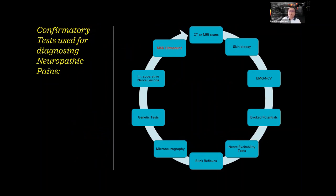We grade neuropathic pain as possible when there is a history of relevant neurological issue or disease and the pain distribution matches our suspicion. We say it's probable neuropathic pain if there is a sensory symptom that matches the neuroanatomically plausible distribution on clinical examination. Then we do tests to confirm whether our impression is correct: CT scan, MRI, ultrasound, EMG, and all other tests that could point to the cause of the pain. There are many tests available — CT, skin biopsy, evoked potentials, microneurography — but we will focus more on MSK ultrasound.